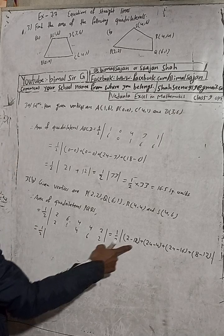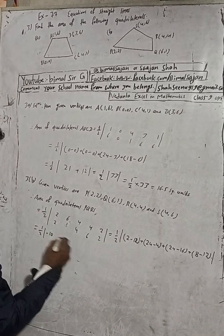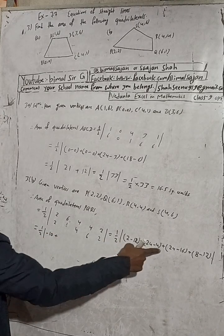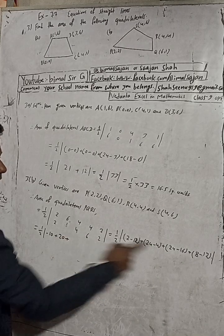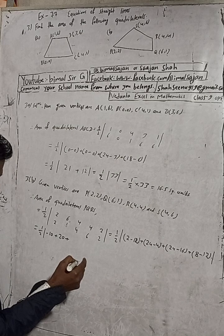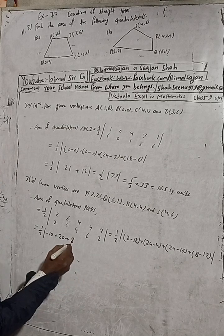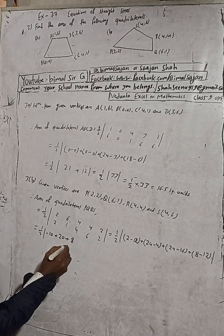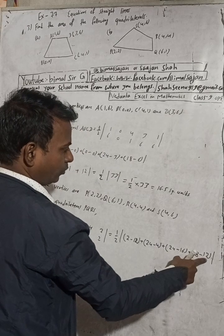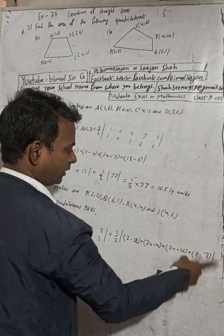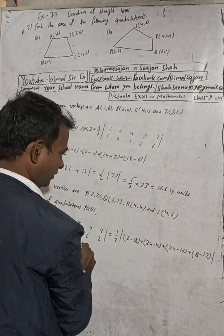1 by 2 modulus: 2 minus 12 is minus 10, plus 24 minus 4 is 20, plus 24 minus 16 is 8, plus 8. There is plus, but 8 minus 12 means minus 4. This minus 4 into plus gives minus 4.